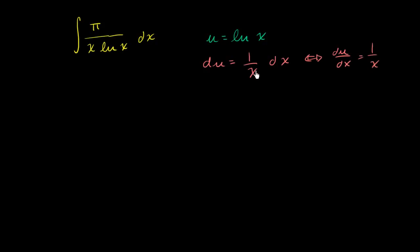This is an equivalent statement to saying that du/dx is equal to 1 over x. So do we see a 1 over x dx anywhere in this original expression? Well, it's kind of hiding. It's not so obvious, but this x in the denominator is essentially a 1 over x, and that's being multiplied by a dx. Let me rewrite this original expression to make it a little bit more sense.